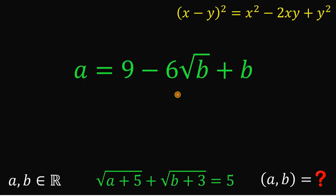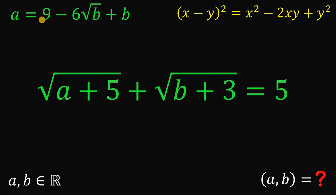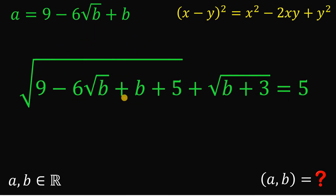We set aside this value and now take our second equation. What we're going to do is replace the value of A with 9 minus 6 times square root of B plus B. So we get: the square root of 9 minus 6 times square root of B plus B, then plus 5, plus square root of B plus 3 equals 5.